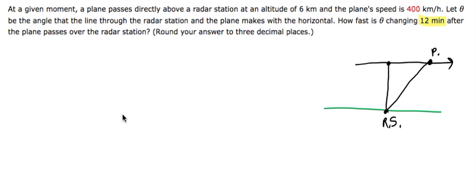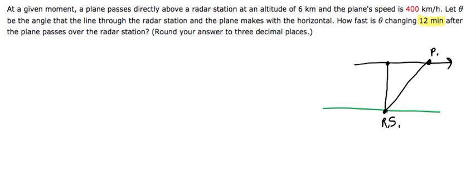In this problem, a plane passes directly above a radar station at an altitude of 6 kilometers. Here's a radar station on the ground, and the plane is flying 6 kilometers overhead. That 6 does not change in the problem, so I'm going to label that as 6. The plane's speed is 400 kilometers per hour. We're going to let theta be the angle that the line through the radar station and the plane makes with the horizontal, so this would be theta right there.